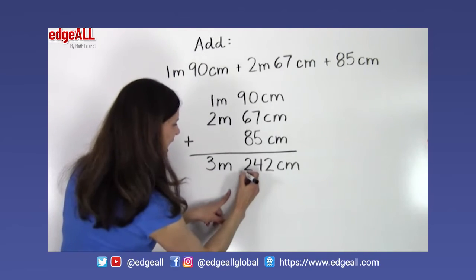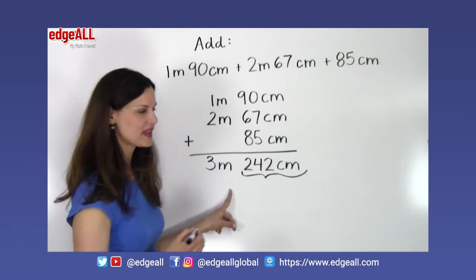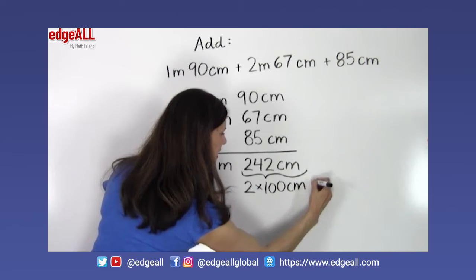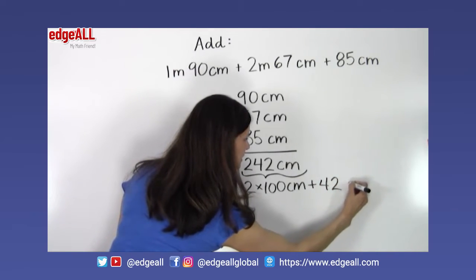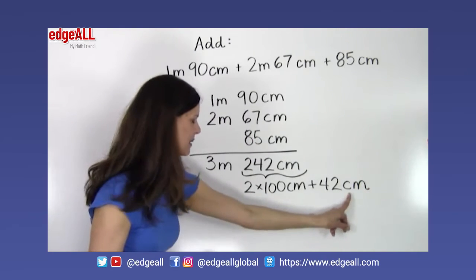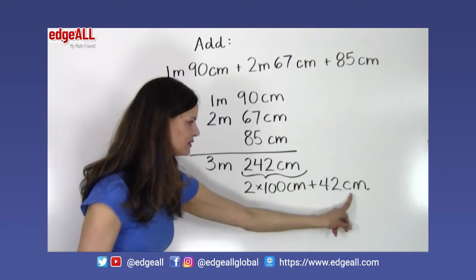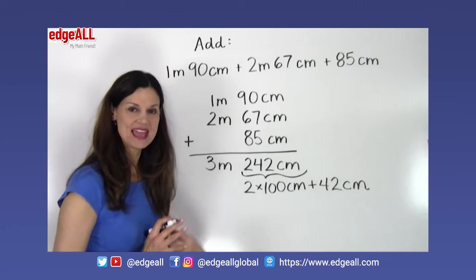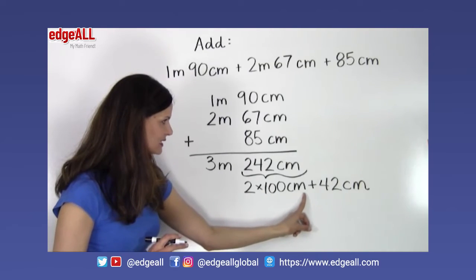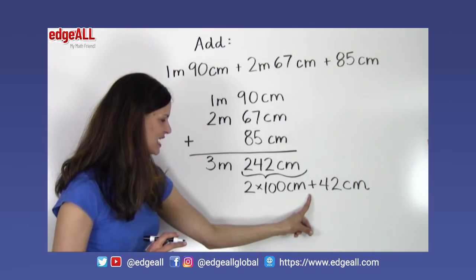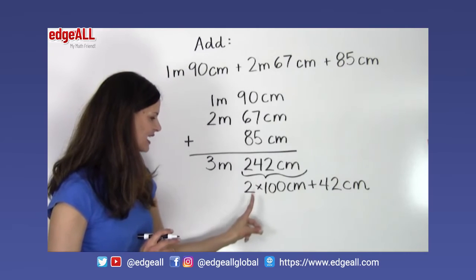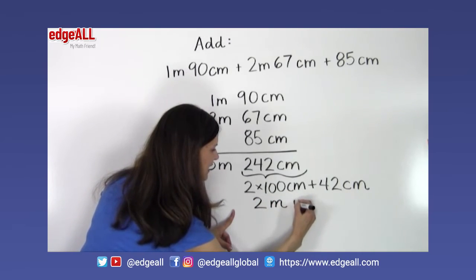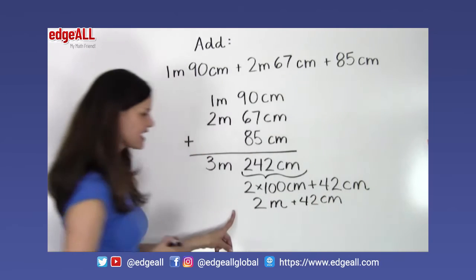So let's look at that written out. I can take this 242 centimeters and I can think of it as 2 times 100 centimeters plus 42 centimeters. So this is the same, 2 times 100 centimeters plus 42 centimeters is the same as 242 centimeters. I've simply split it up into two different parts. Well, I know that 100 centimeters equals a meter. And so instead of saying 2 times 100 centimeters, I can say 2 times 1 meter or 2 meters plus still the 42 centimeters that I have here.